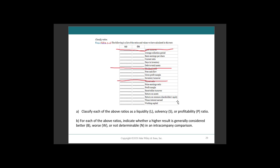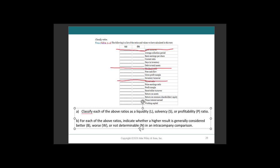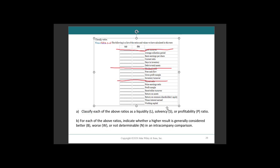So give this video a pause. When you come back, I want you to have filled out column A — whether you believe it's a liquidity ratio, a solvency ratio, or profitability. And then in column B, say whether in general higher results are considered to be better, worse, or non-determinable when comparing a company to itself and its performance in the prior year. I've crossed out non-examinable items because we invest our time wisely here. Come back and we'll do a debrief.